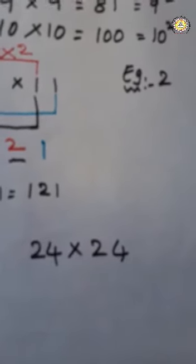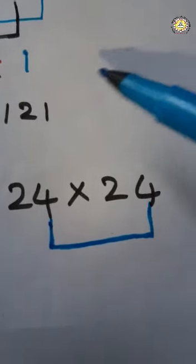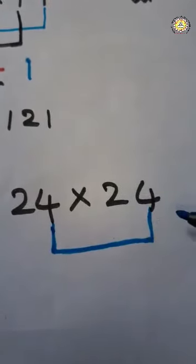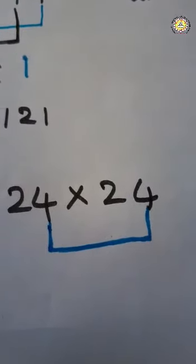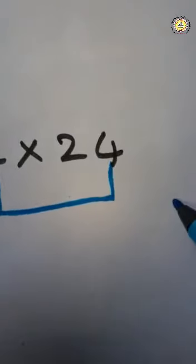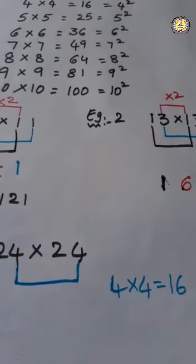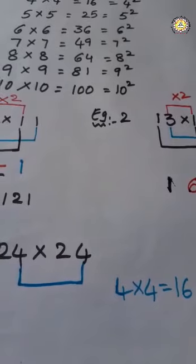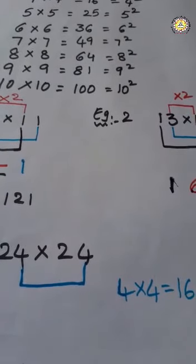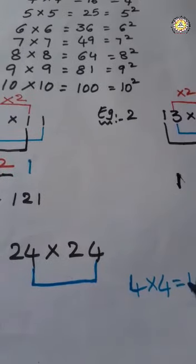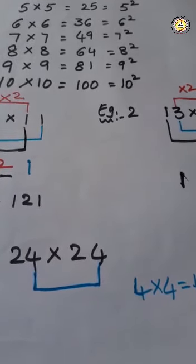The third example is 24 into 24. Now first multiply this 4 into 4. This is the first step. 4, 4s how much? The first step is 4, 4 into 4, 4, 4s, 16. But you got double digit here. So you should write only single digit. That's why I am writing here 6. And this one should be carry. So I am cancelling 6 here. And I am writing 6 down.